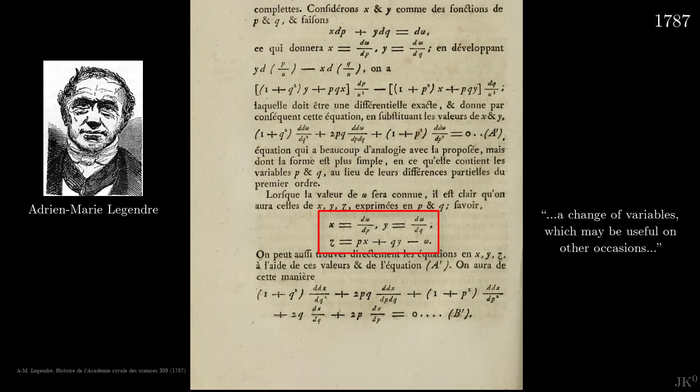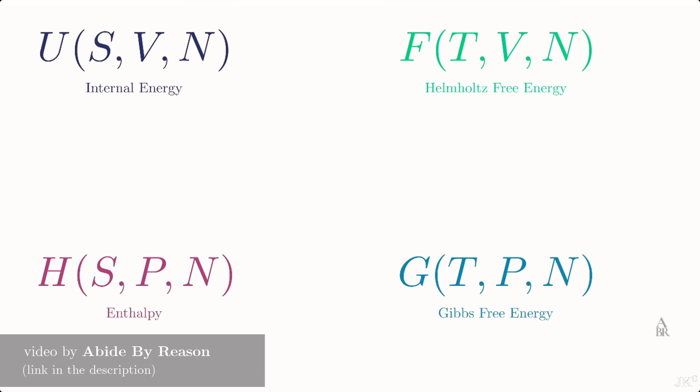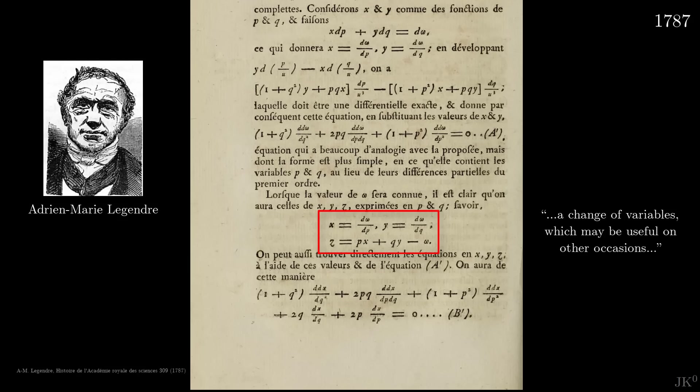Here is the transformation that he described as a change of variables, which might be useful in other occasions. I really like Legendre's humble choice of words here. His transformation indeed became very useful in Hamiltonian mechanics and also in thermodynamics, where the Legendre transformation is used to define the so-called thermodynamic potentials. But apparently, Hamilton didn't know about this.